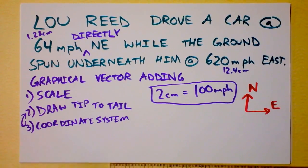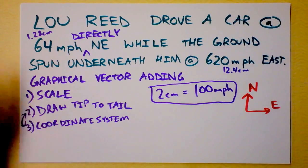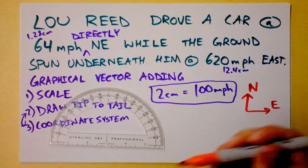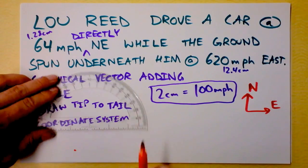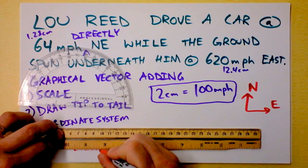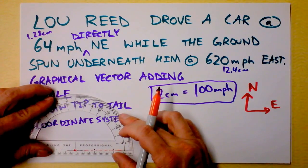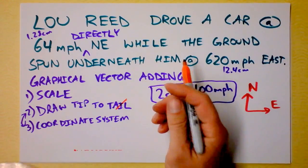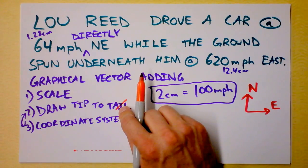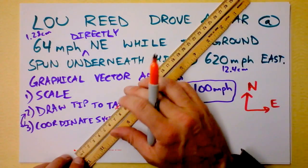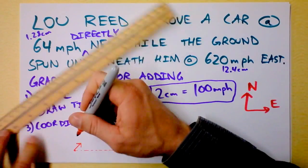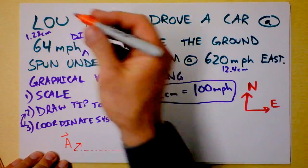This is north and that's east. I need to draw northeast at 45 degrees. I'm going to use a protractor to get it as close as possible. I start with east and draw a dotted line to the east, then put the protractor there and mark 45 degrees. My vector needs to be 1.28 centimeters long going in that direction — right there. This is Vector A, the velocity of the car.